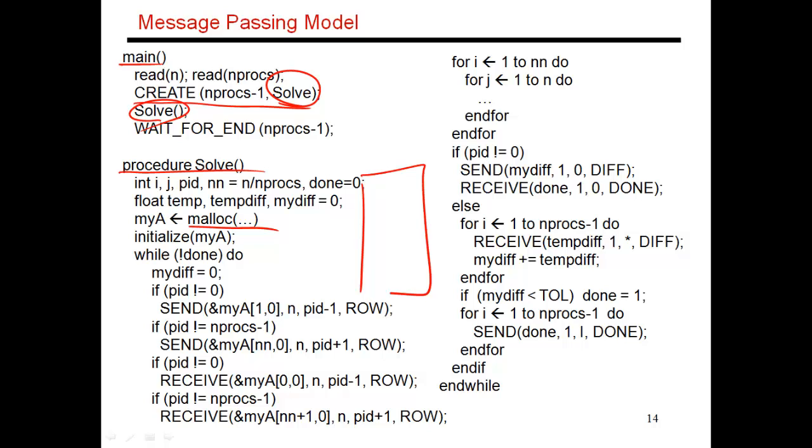So again, if I take my matrix A, I've essentially partitioned it into these multiple pieces, and every thread is creating its own space for itself.